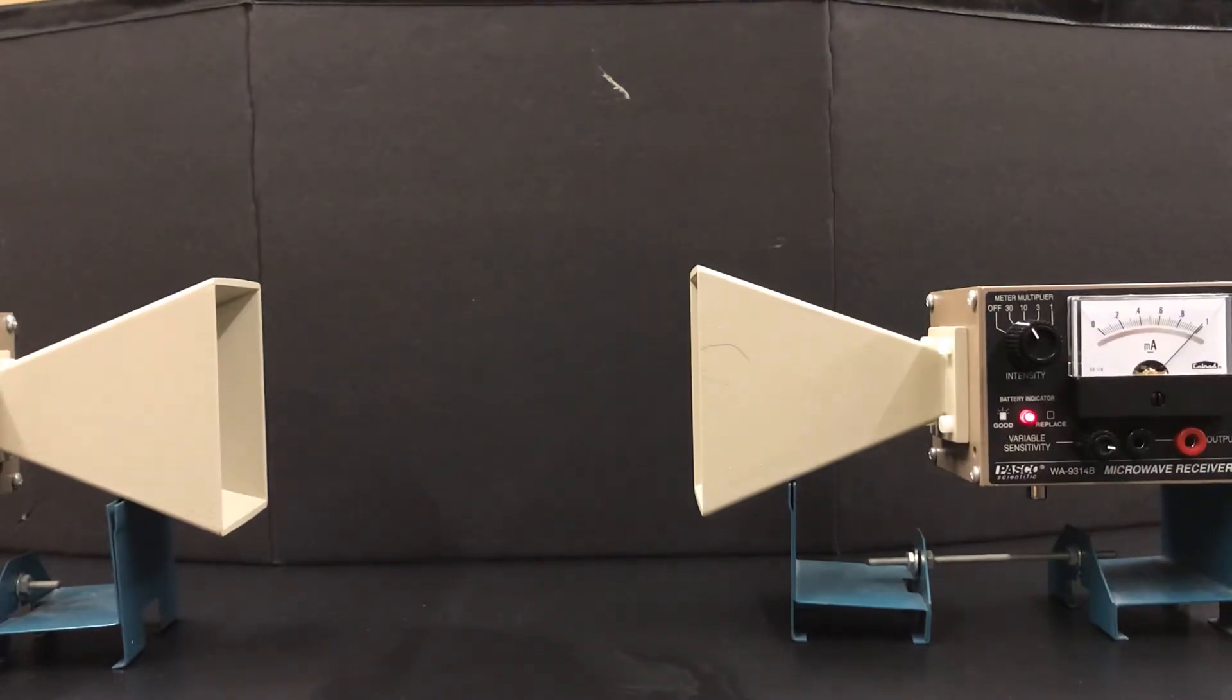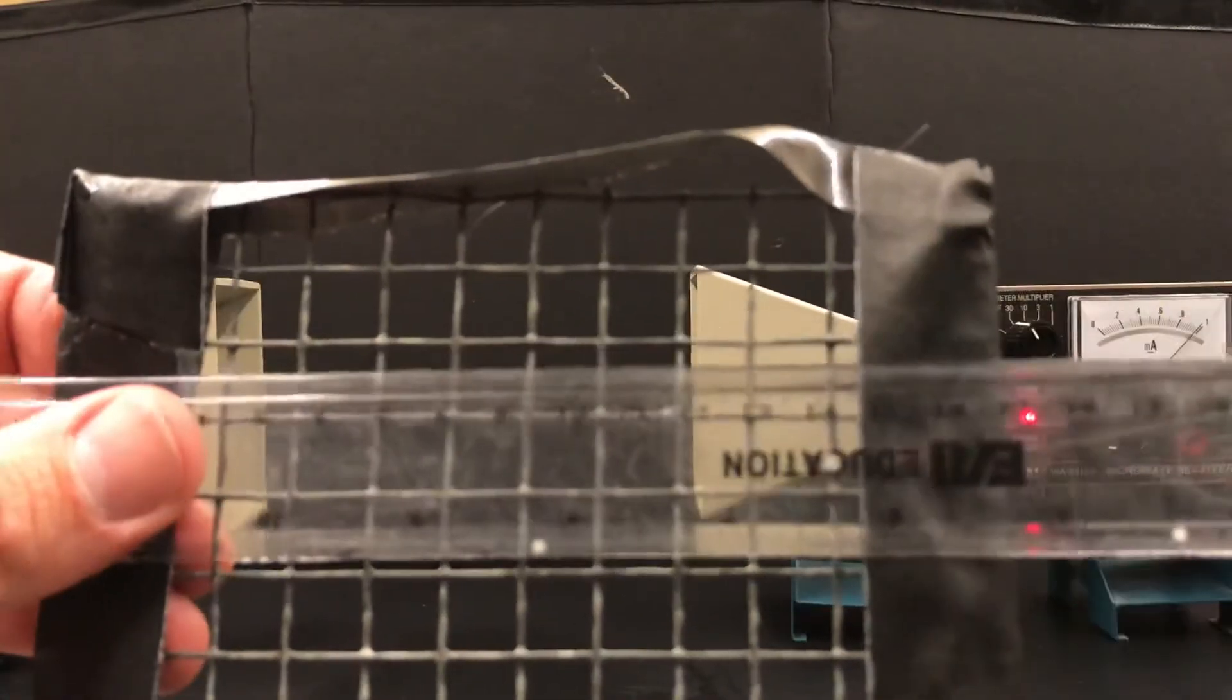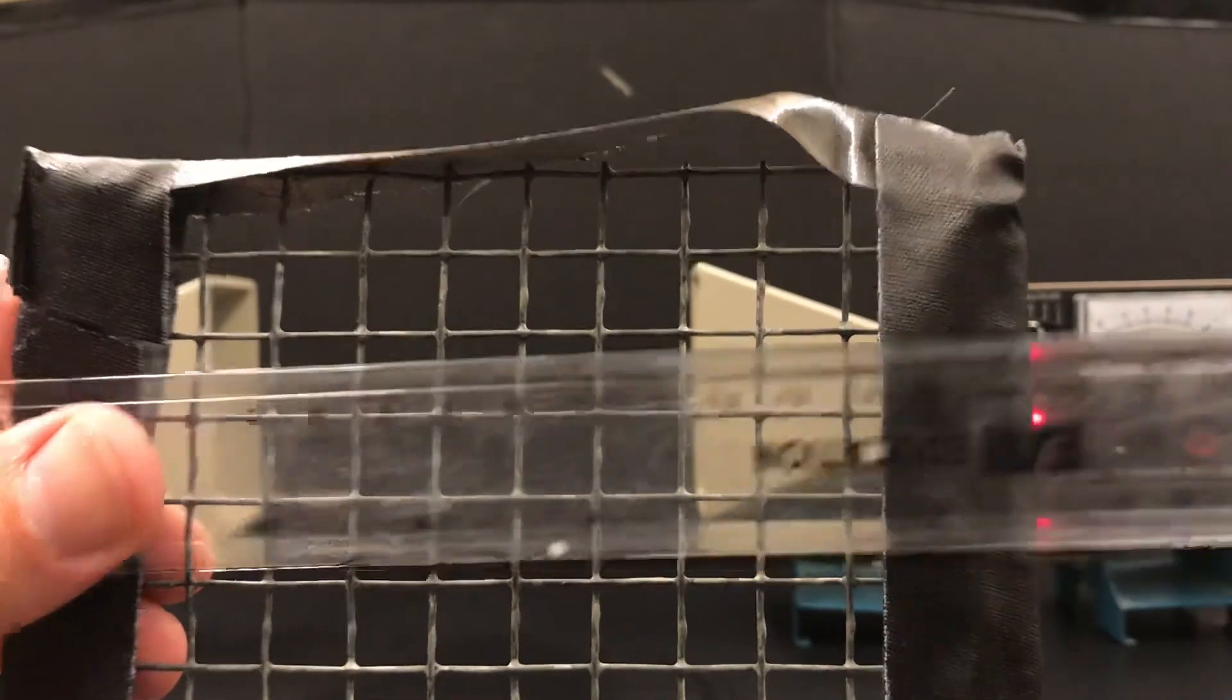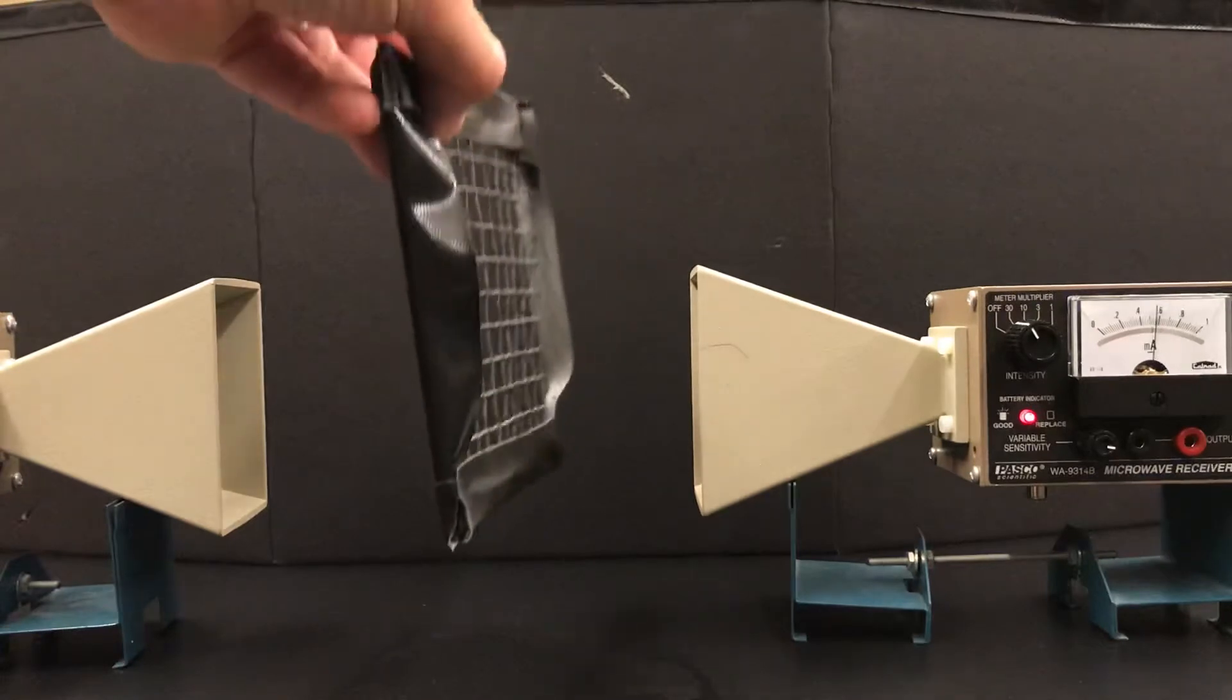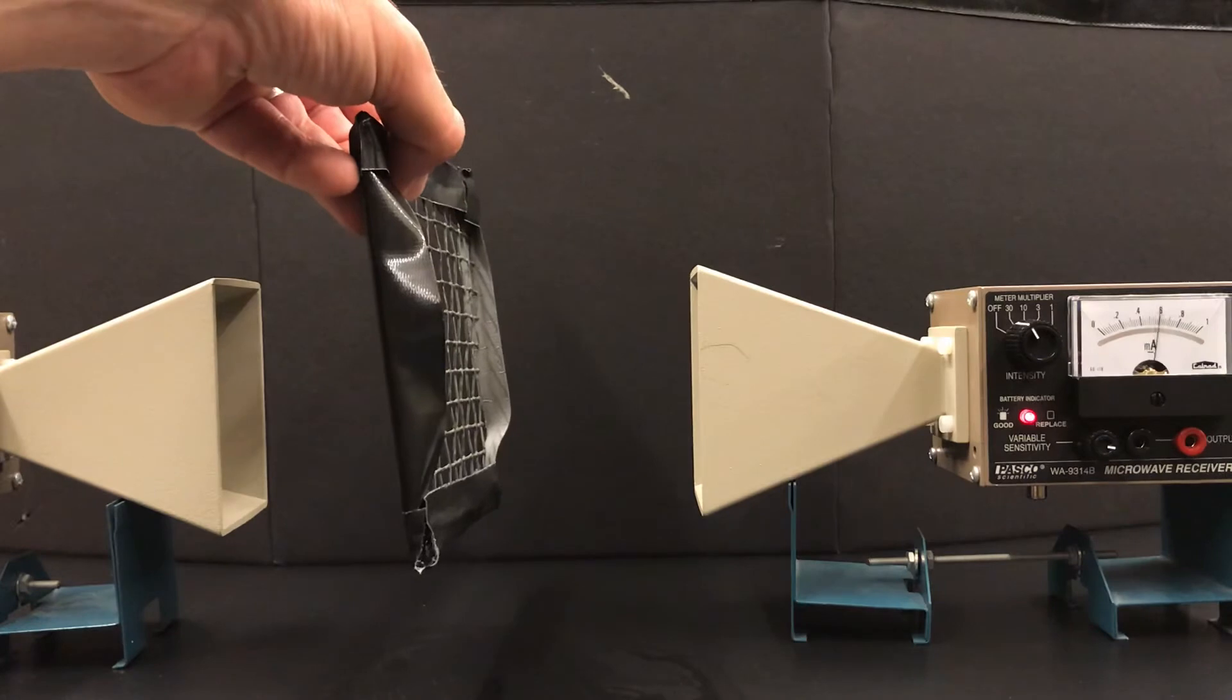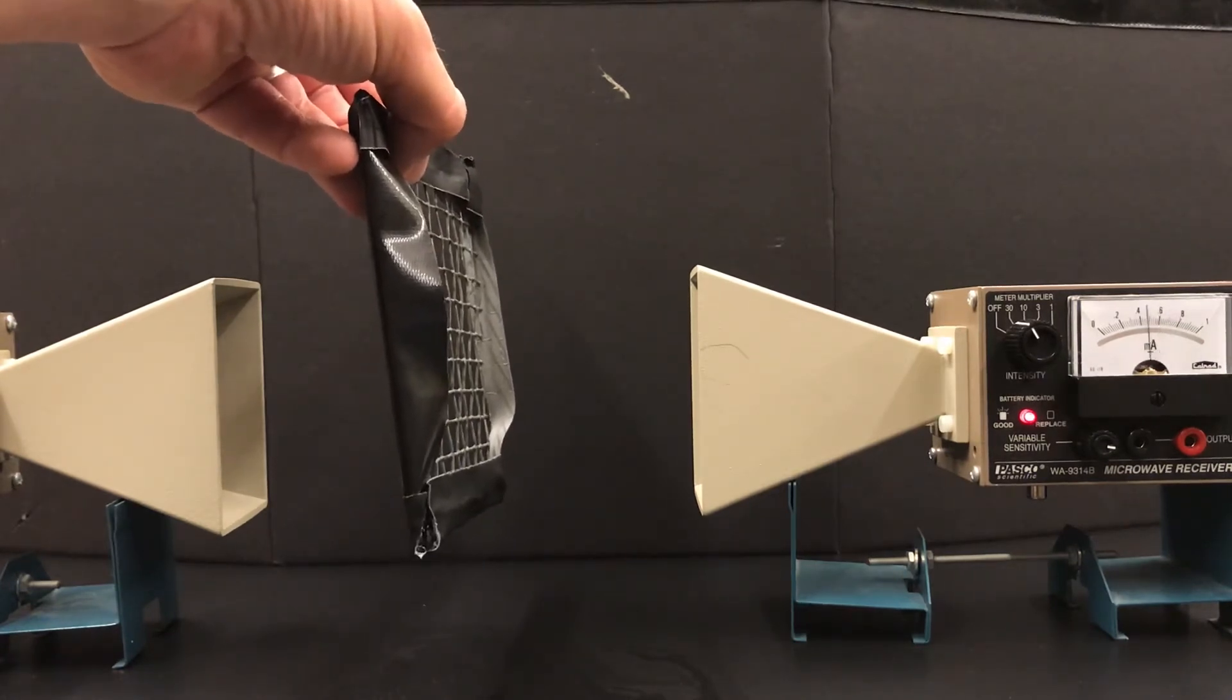I also have a couple of screens. You can see this wire screen is about a centimeter square. The needle's bouncing around a bit but it's still mostly reading sort of one-half to one, so a lot of microwaves are getting through.